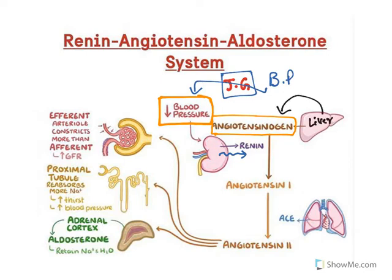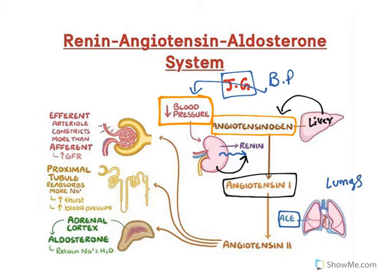The liver releases angiotensinogen, whereas the kidney releases renin. Renin acts on angiotensinogen and converts it to angiotensin I. Angiotensin I is then affected by angiotensin converting enzyme, released from the lungs. This enzyme converts angiotensin I to angiotensin II. So the final product of this system is angiotensin II, which has multiple effects.